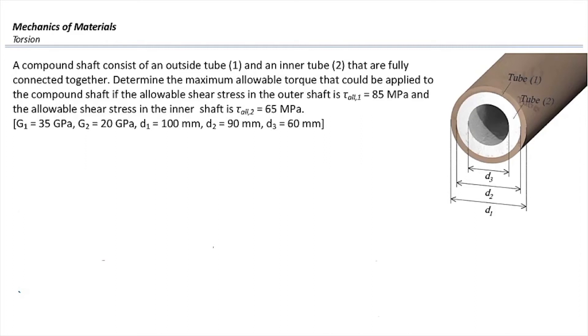A compound shaft consists of an outside tube number 1 and an inner tube number 2 that are fully connected together along the length of the element. We want to determine the maximum allowable torque that could be applied on the compound shaft if the allowable shear stress in the outer shaft is 85 megapascals and the allowable shear stress in the inner shaft is 65 megapascals. This is a very practical problem because we work with compound shafts, and in many cases they are made of two different materials.